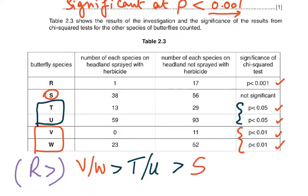Table 2.3 shows results from the chi-square test for other butterfly species R, S, T, U, V, W. The number of each species on headlands sprayed with herbicide was always less than those on unsprayed headlands — for example, sprayed vs unsprayed: R was 1 vs 17, S was 38 vs 56, T was 13 vs 29, U was 59 vs 93, V was 0 vs 11. There are no anomalous readings — in every species, the sprayed count was lower.